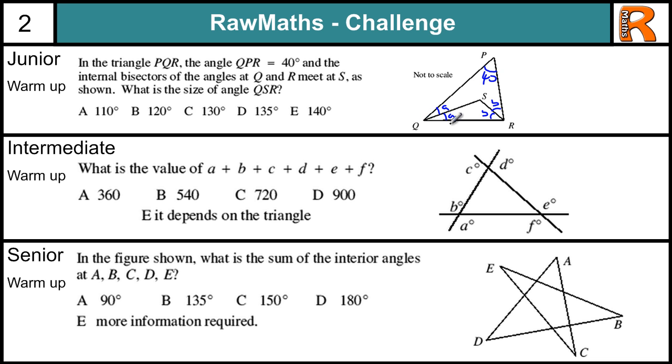Now looking at the big triangle QPR, these all add up to 180. So we've got 2A plus 2B plus 40 equals 180. So that's 2A plus 2B equals 140. So if we half that, we get A plus B equals 70.